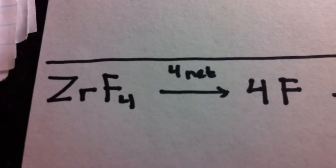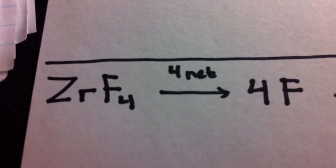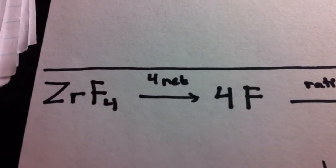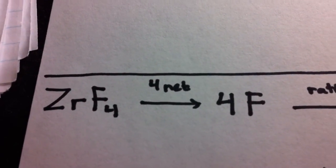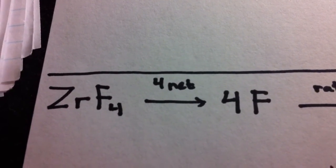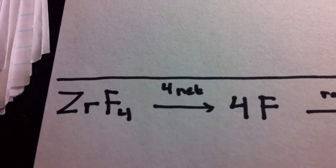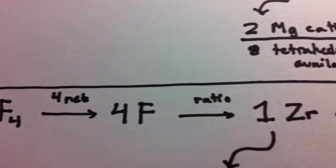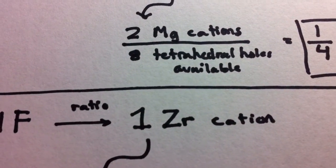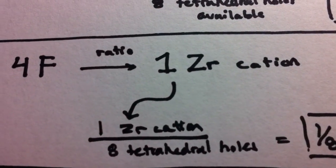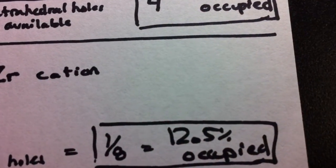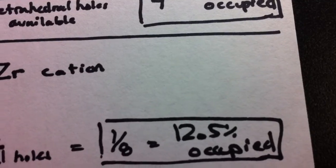For the last one, zirconium fluoride: again, four net anions — four fluoride. For the number of cations, we have four fluoride, and by the formulaic ratio, that gives us one zirconium cation. So it's one cation over eight tetrahedral holes, or 12.5% occupied.